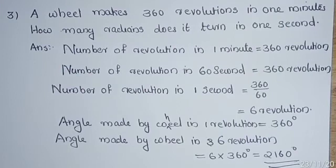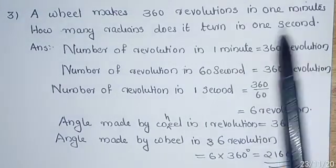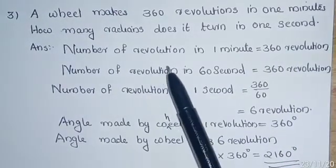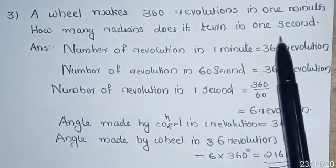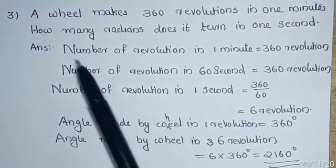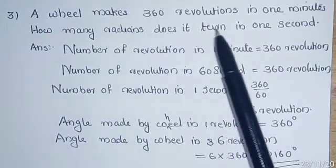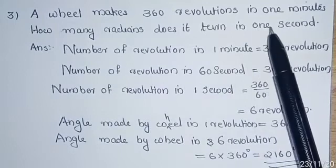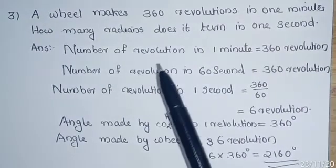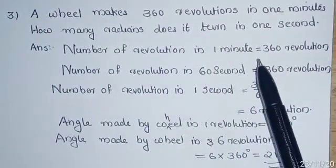We start from the third question. A wheel makes 360 revolutions in 1 minute. How many radians does it turn in 1 second?